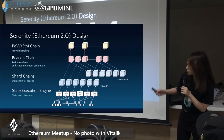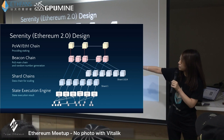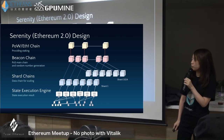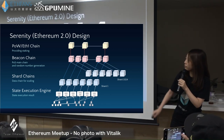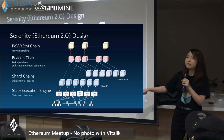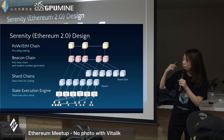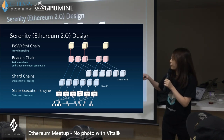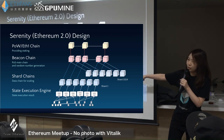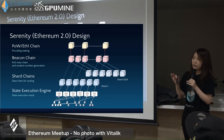The Beacon Chain will provide proof-of-stake and also serve as the random number generator. Under the Beacon Chain, we are designing around 1,024 shard chains. Please note that those structures are only for the data layer — they don't have in-protocol state execution right now. We will add the state execution engine on the structure. This is the whole picture to give you a good overview.